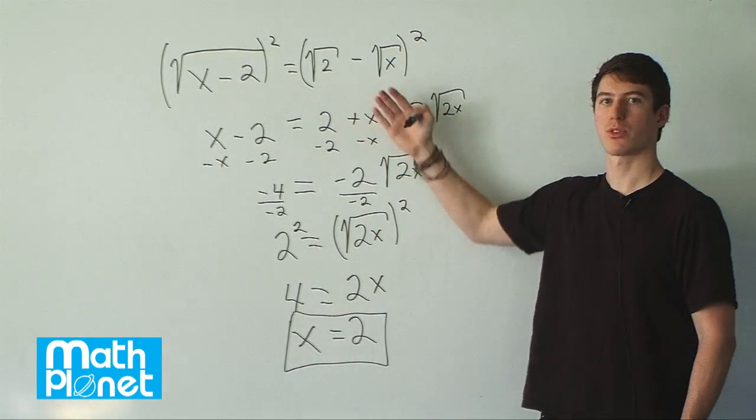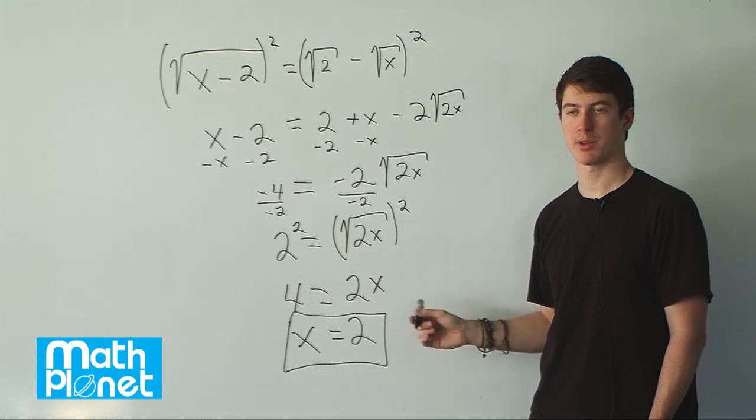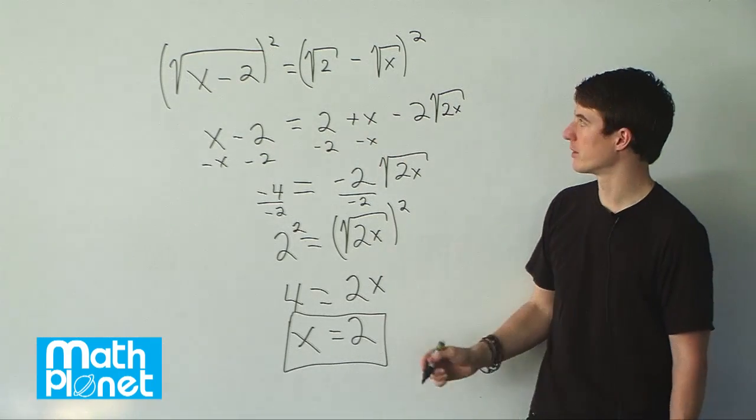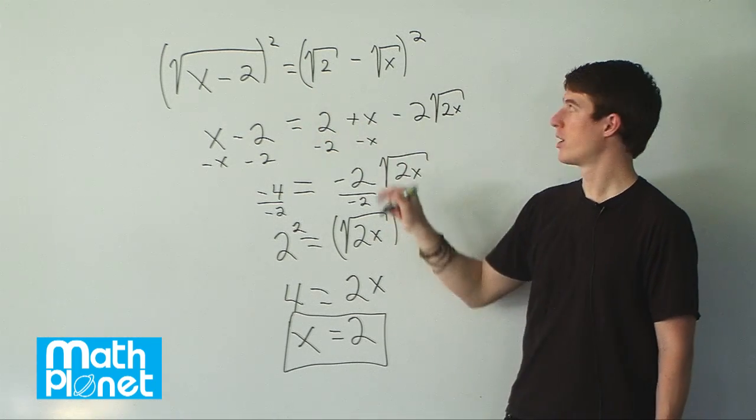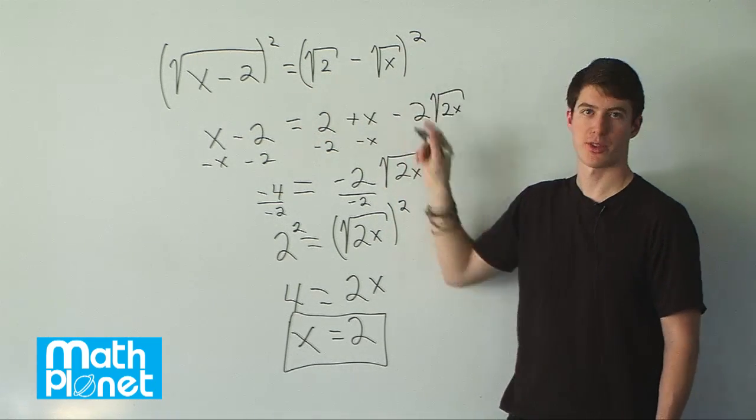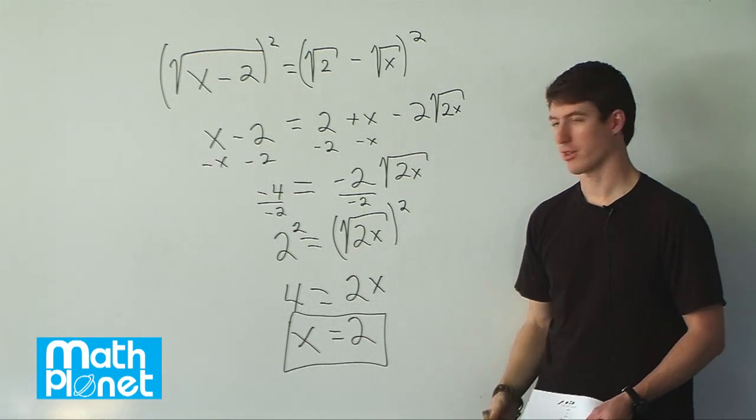Since we were squaring square roots, we don't have to worry about any plus or minuses. If we plug this back in, we'll see that we get the same thing. We have 2 minus 2, that gives us 0. And then we plug in a 2 here. This is 0 on the right-hand side. So this is correct, and that's our final answer.